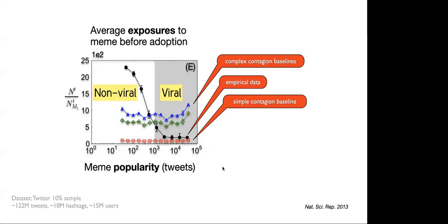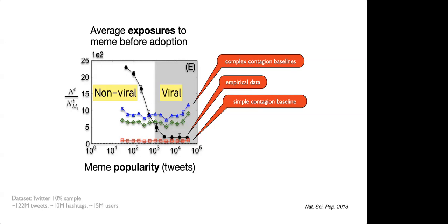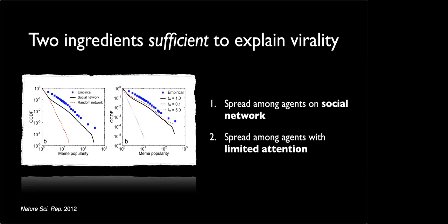Sinan asks a clarifying question about the attention mechanism: if everyone gave full attention, why wouldn't things go viral? It seems counterintuitive — if people had more attention to consume and spread things, wouldn't more things go further?